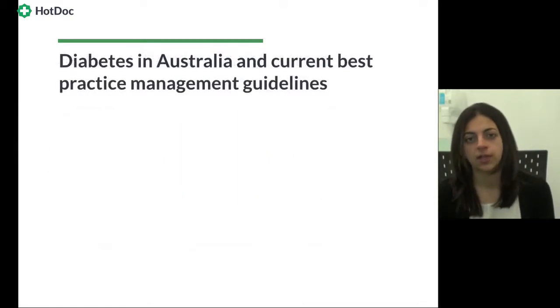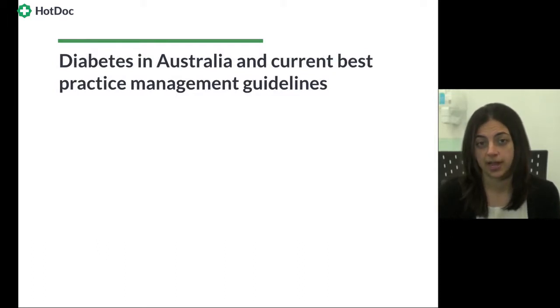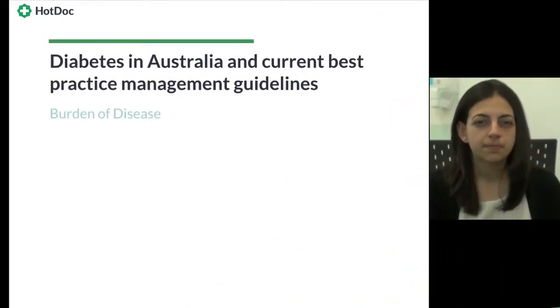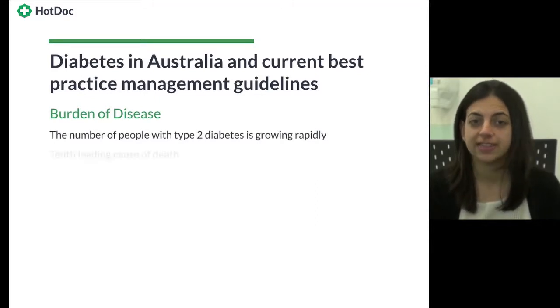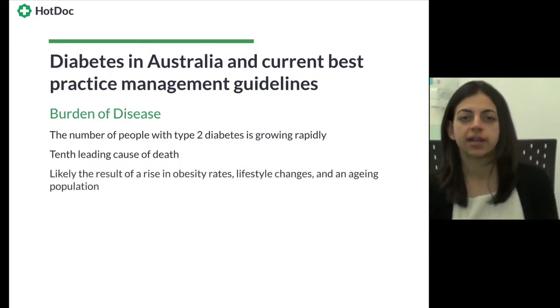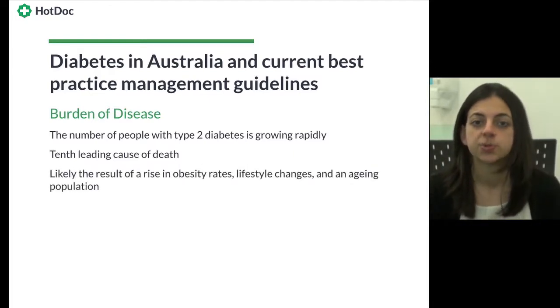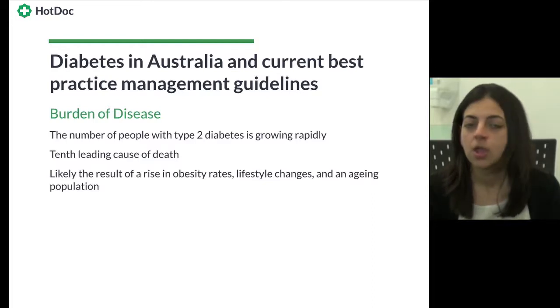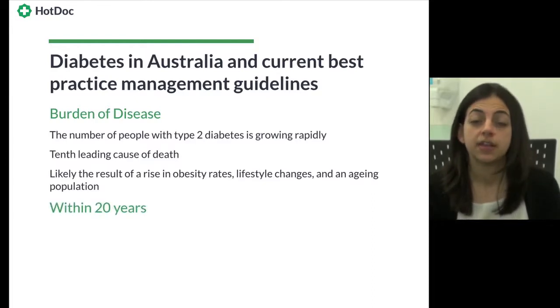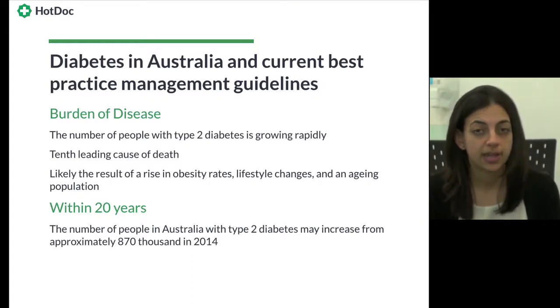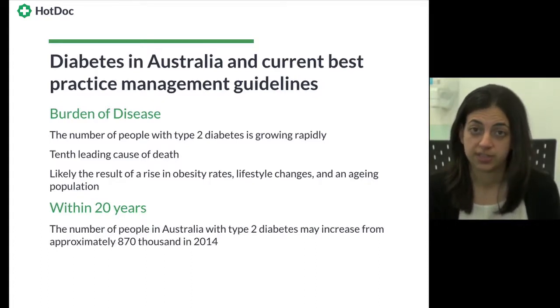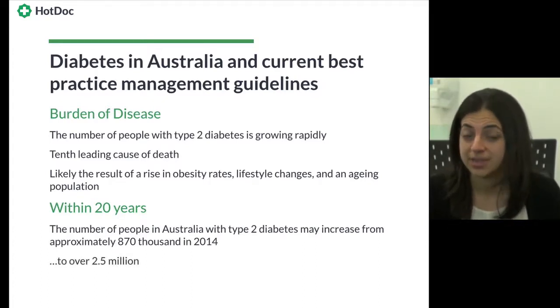In the next video, we'll discuss type 2 diabetes in Australia and take a closer look at current best practice management guidelines. The number of people with type 2 diabetes is growing rapidly in Australia and is currently the 10th leading cause of death. This is likely the result of a considerable rise in obesity rates, lifestyle and dietary changes, as well as the aging population. Within 20 years, it's estimated that the number of people in Australia with type 2 diabetes will increase from approximately 870,000 in 2014 to over 2.5 million.